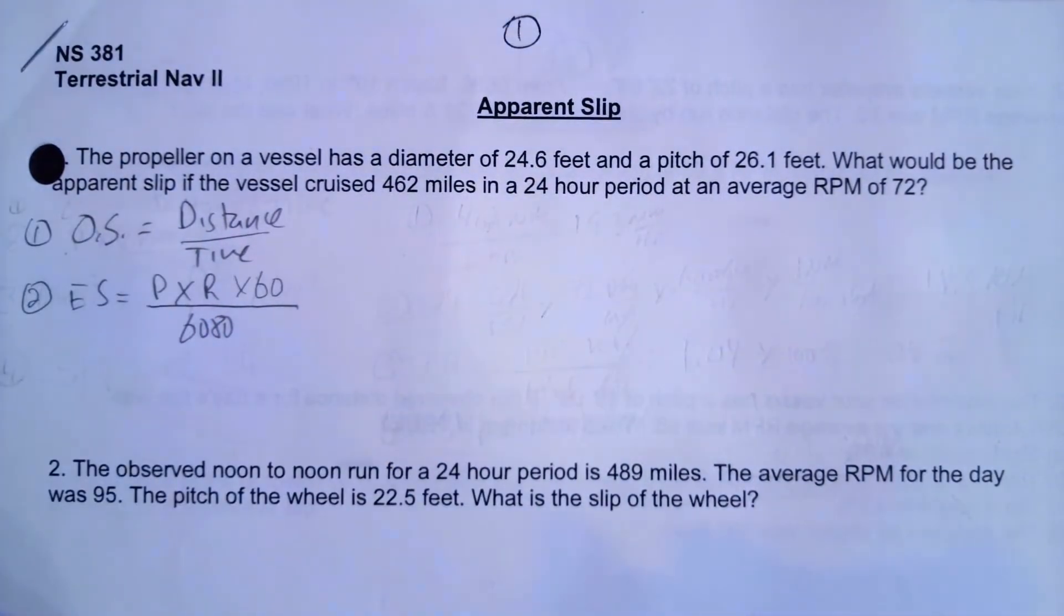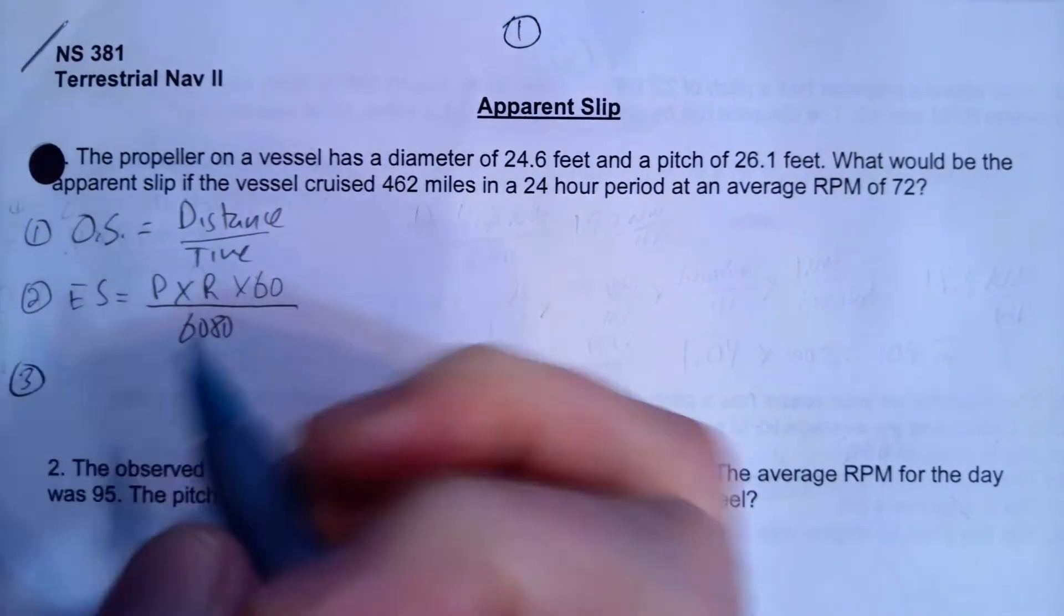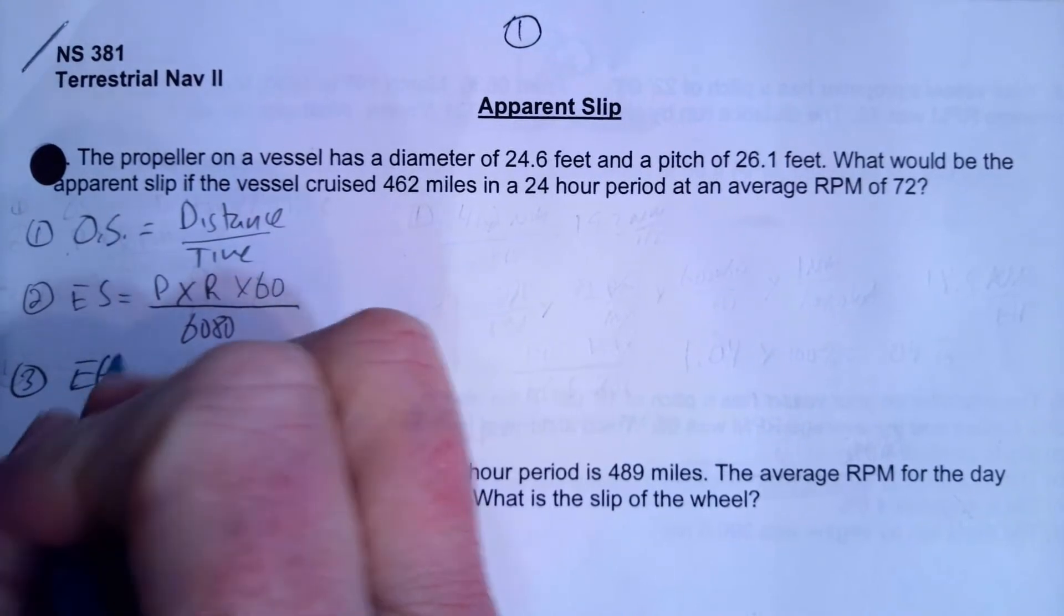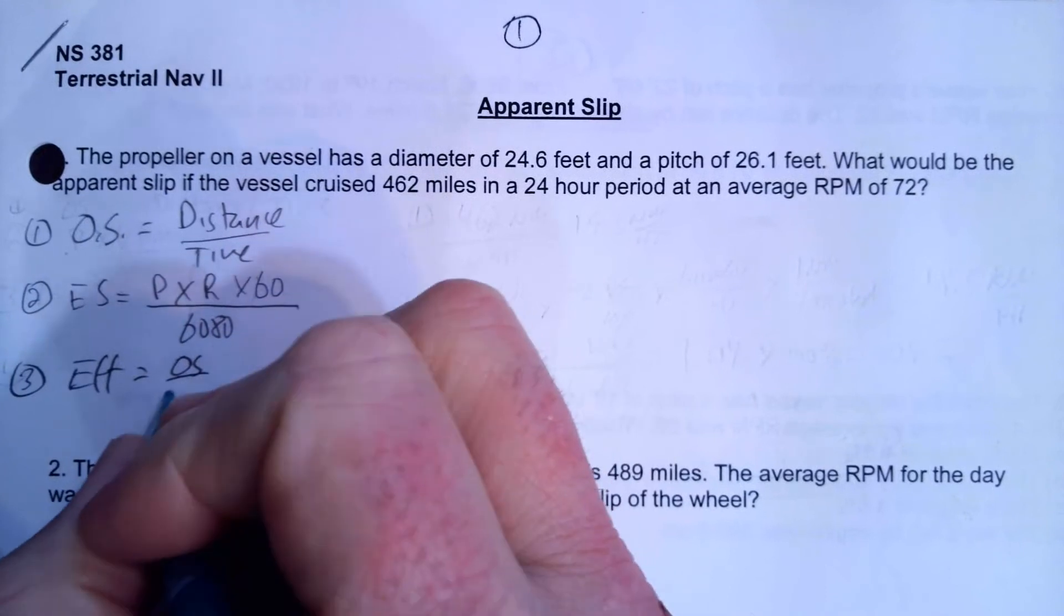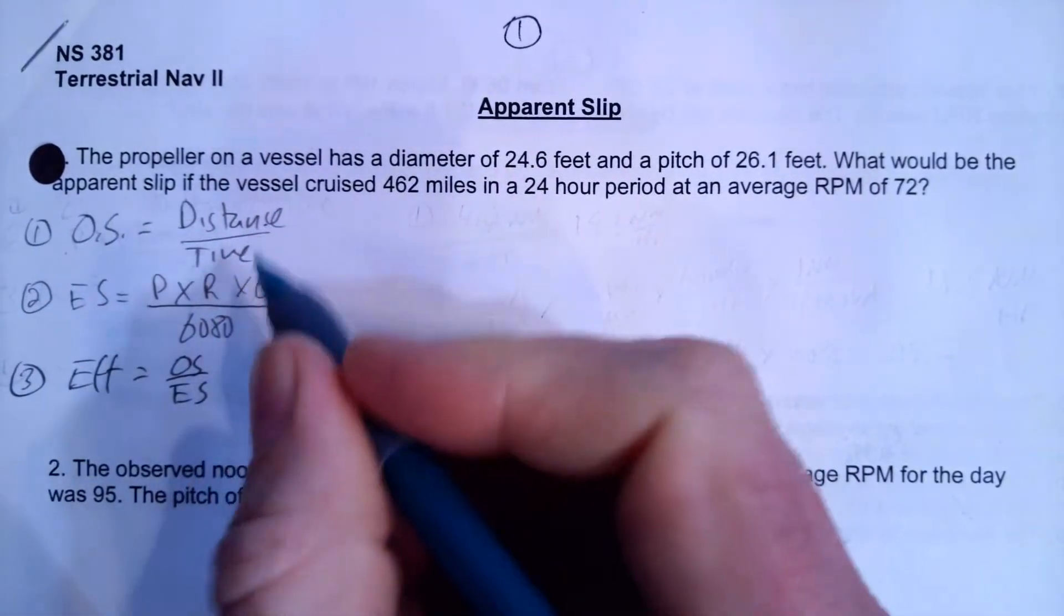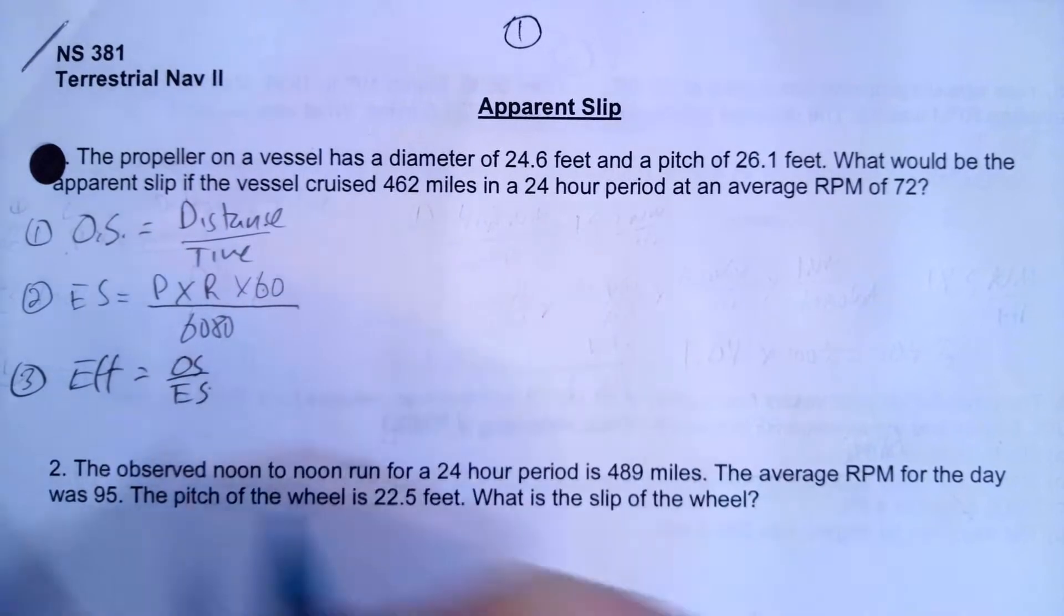Once we have both of those two things calculated, then what we're going to do is we're going to calculate the efficiency, which is going to be the observed speed over the engine speed. So we'll just take, we're going to have to calculate this, we'll have to calculate that, and we'll substitute them into this formula.